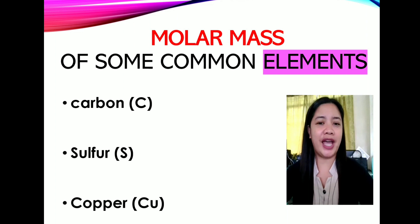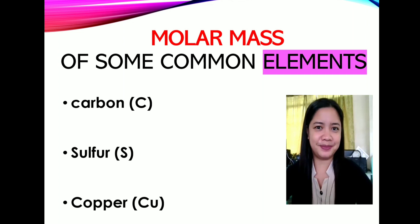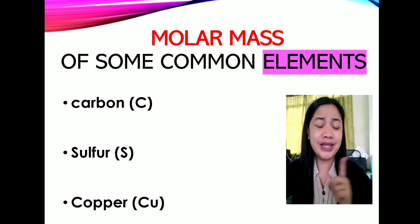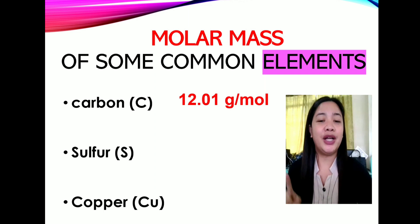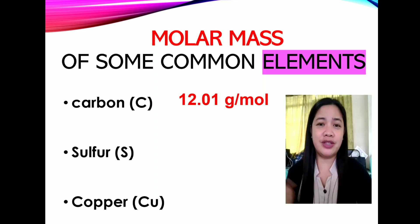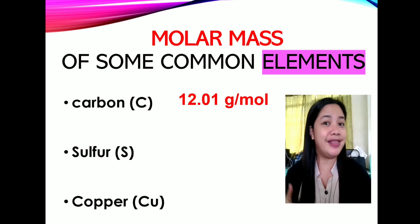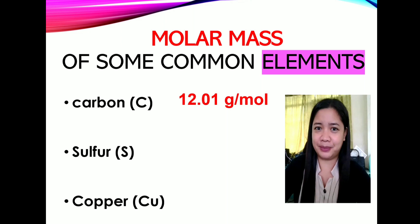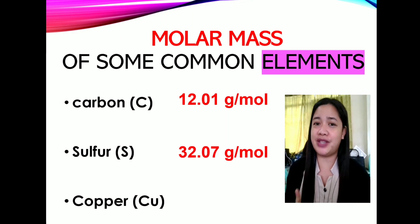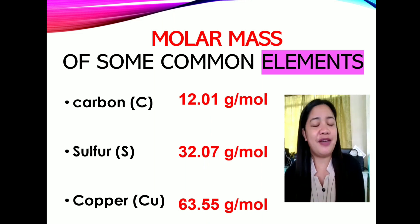Now we are going to identify the molar mass of these elements. Let's start with carbon. What is the molar mass of carbon? That is 12.01 grams per mole. Take note that we are going to use the unit grams per mole, since we are considering the molar mass of a certain element. How about the element sulfur? That is 32.07 grams per mole. And copper — that is 63.55 grams per mole.